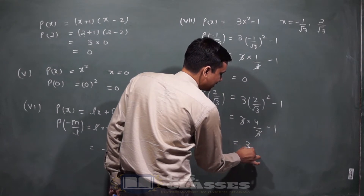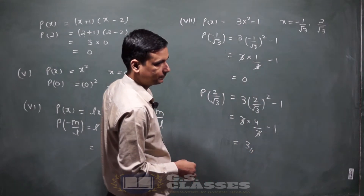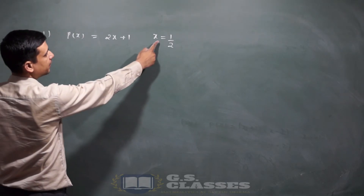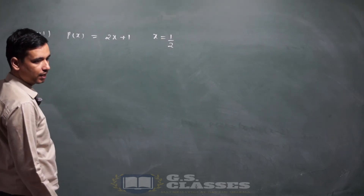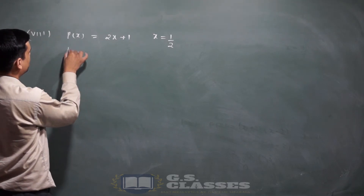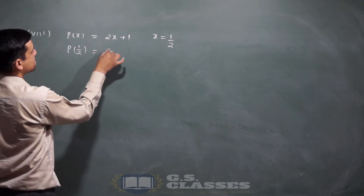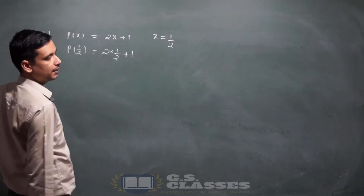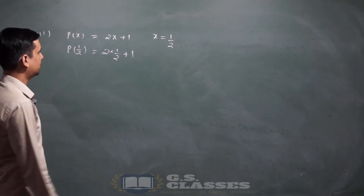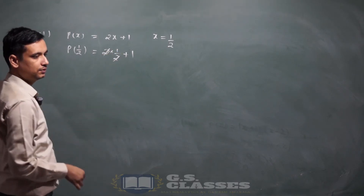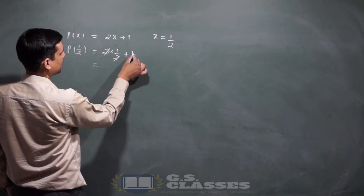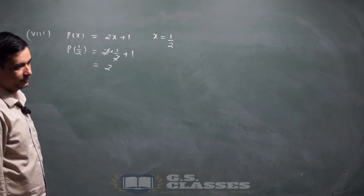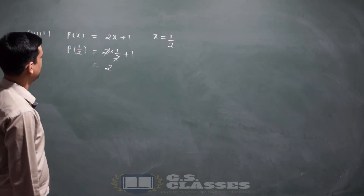p(x) = 2x plus 1, x = 1/2: 2 into (1/2) plus 1 → 2 से 2 cancel → 1 plus 1 = 2।